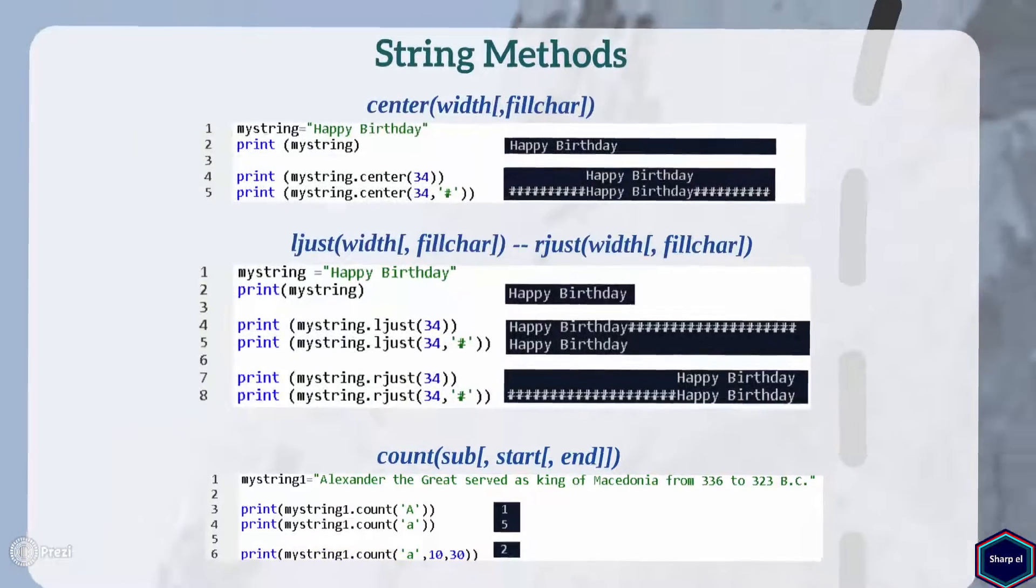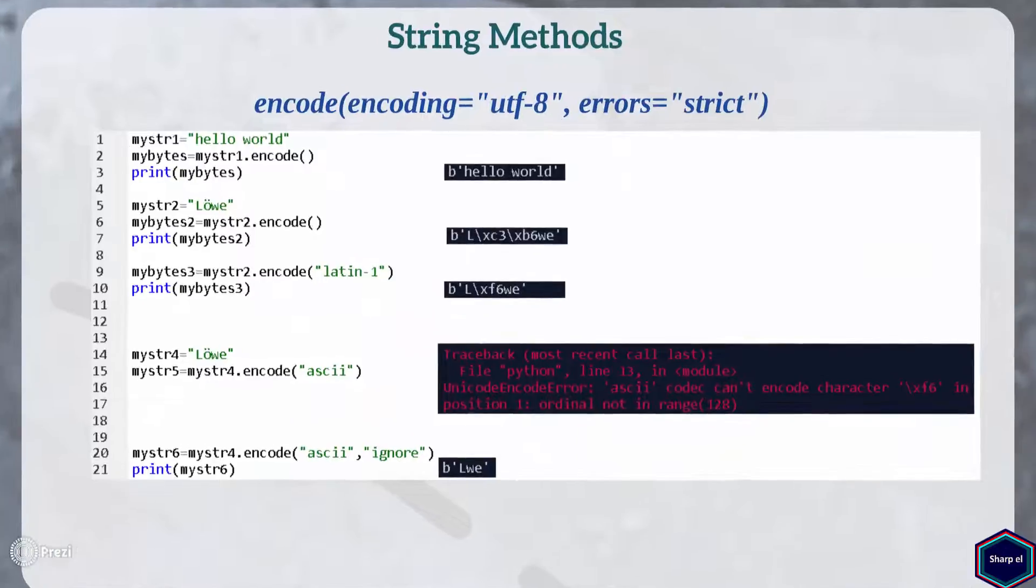Now let's move to next method encode. Encode method returns a byte subject. Bytes is another data type in Python and it contains sequence of 8-bit values. To understand encode method, let's see an example. In this example, I have string hello world. And when I call encode method on my string, the encode method returns a byte subject, having UTF-8 encoding set by default.